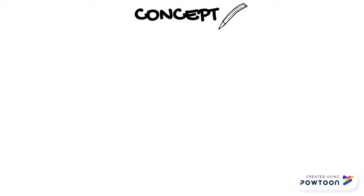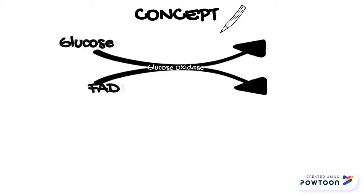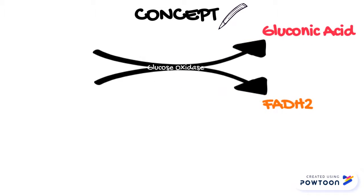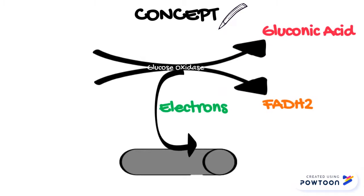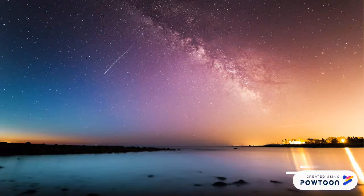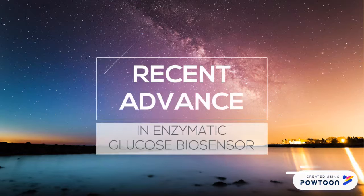Here is the enzymatic glucose oxidation mechanism presented by third generation sensors. Firstly, glucose is oxidized to gluconic acid by glucose oxidase. The FAD component of glucose oxidase is reduced to FADH2 and electrons are released. The electrons are then utilized directly by the third generation electrode.